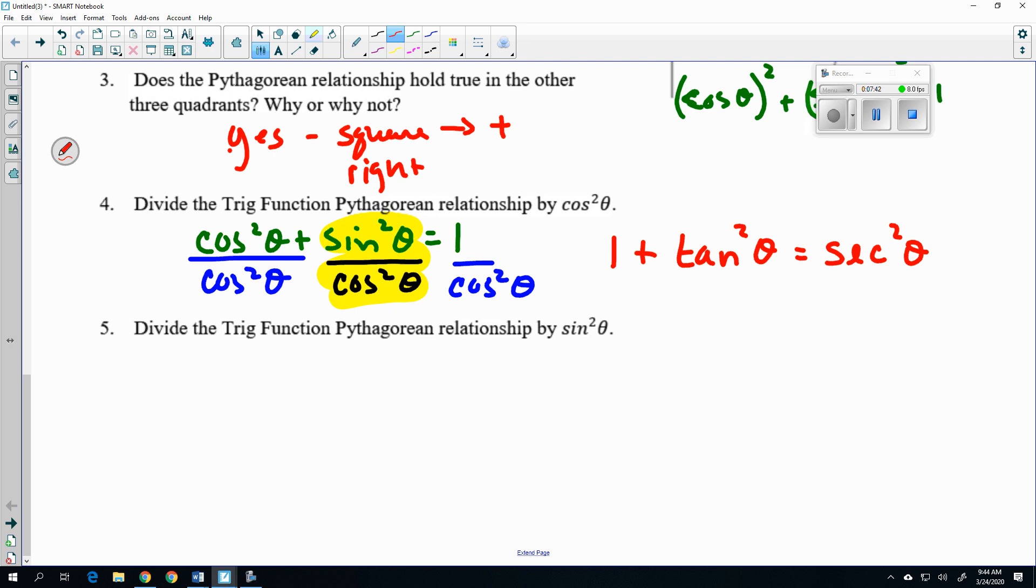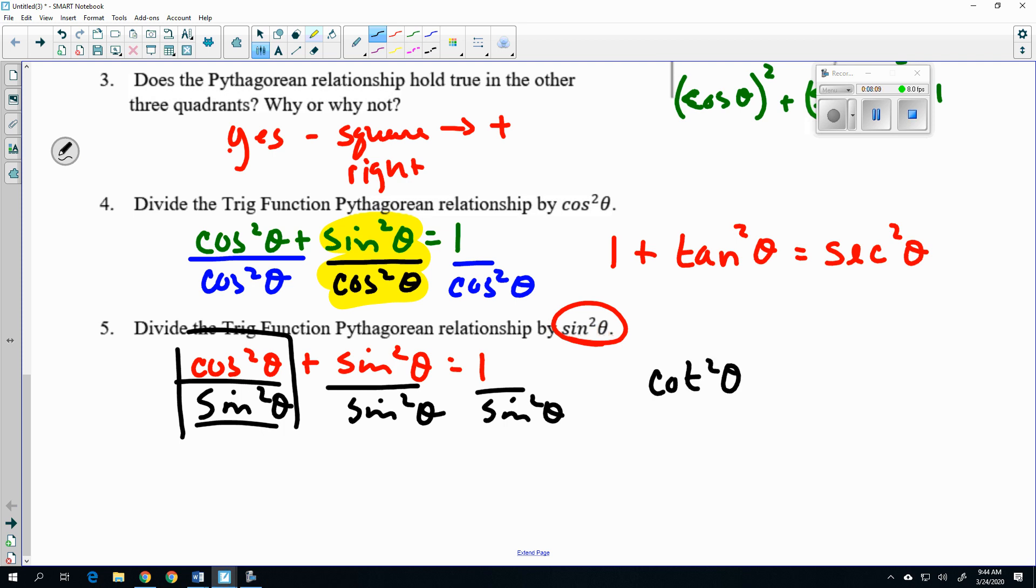And likewise, I can take, again, my Pythagorean. And this time, instead of dividing it by cos²θ, let's divide it by sin²θ. And again, you must remember to divide every single piece by the same function. And so if I'm looking at this relationship, cos²θ over sin²θ, that is cot²θ + 1 = 1 over sin²θ is csc²θ. So that's the derivation of the Pythagorean from the unit circle, knowing x, y, and 1, as well as Pythagorean on a right triangle, a² + b² = c². And then we've just rewritten them into their cousins.